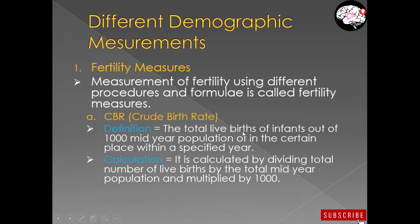We only count live births — miscarriages are not included. So the total live births of infants among a thousand mid-year population — how many total live births are there in a certain place in a specific year — that total number of live births per thousand mid-year population is called the crude birth rate.